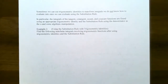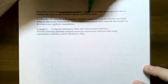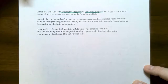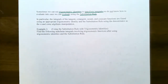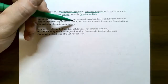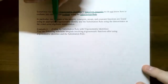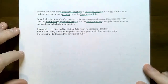Sometimes you may have to use trigonometric identities to help transform integrals that you don't know how to find the antiderivative of, and then evaluate using the substitution rule. The basic antiderivatives we know for trig functions are sine, cosine, sec², csc², sec(x)tan(x), and csc(x)cot(x). You can also find the integral of tangent, cotangent, secant, and cosecant by using an appropriate trigonometric identity and substitution.